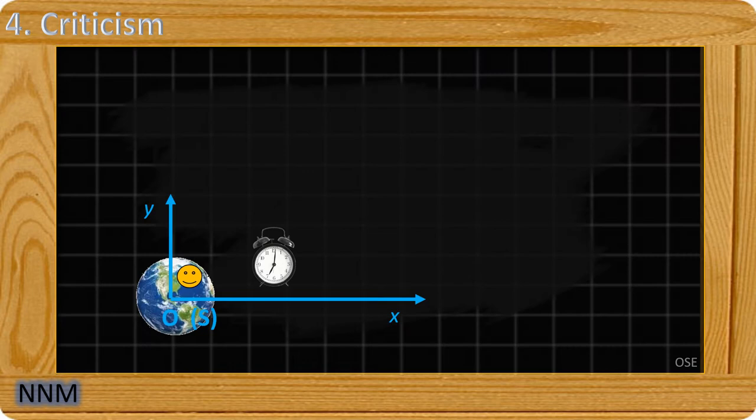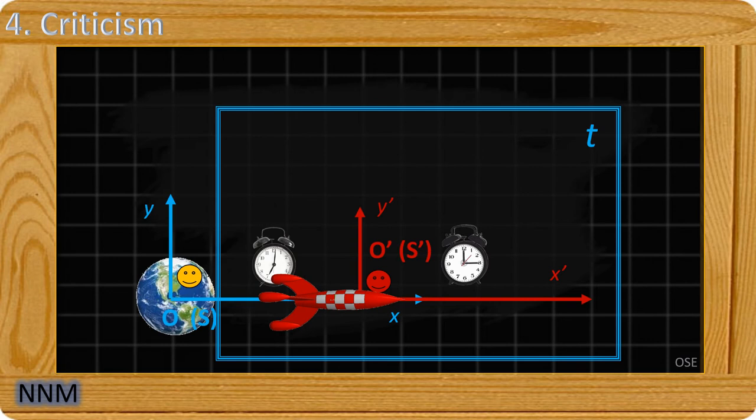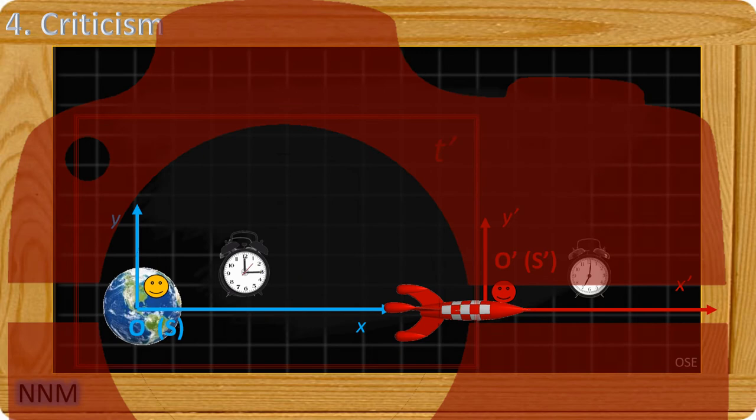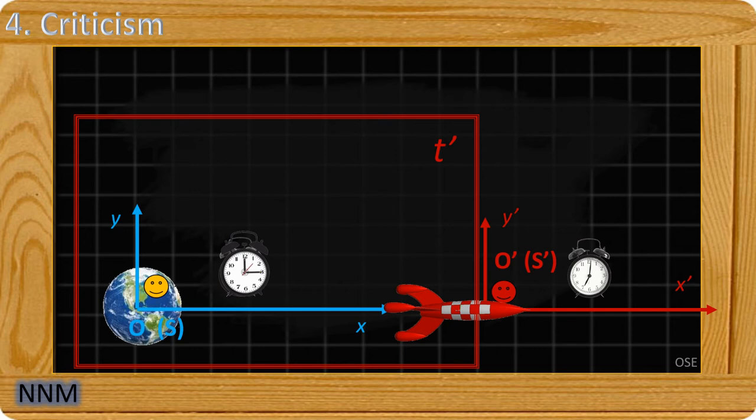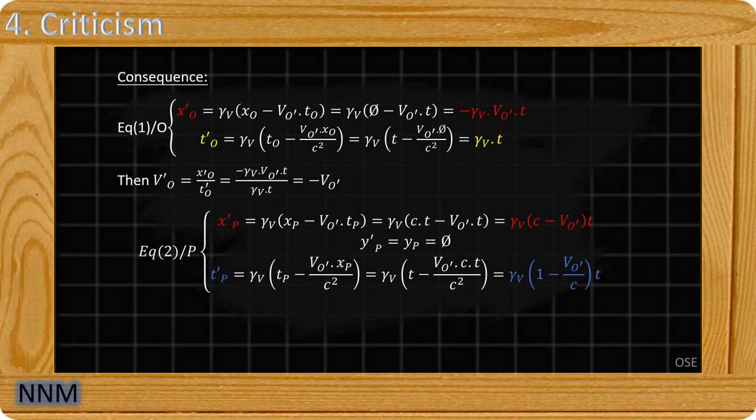The yellow observer is in the reference frame S. He takes a photo. He obtains the distance X of the origin O' and the distance X from the photon P at the instant T. The red observer is in the reference frame S'. He takes a photo. He obtains the distance X' of the origin O' and the distance X' from the photon P at the instant T'. You can watch this video in slow motion and check the calculations for yourself.